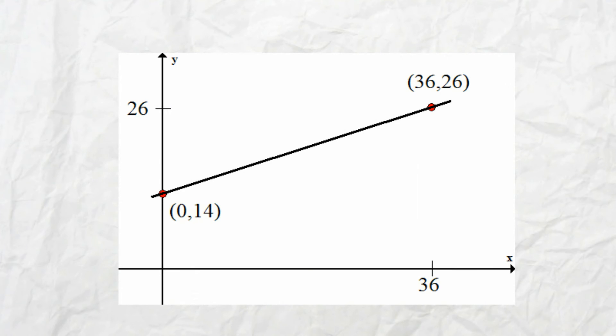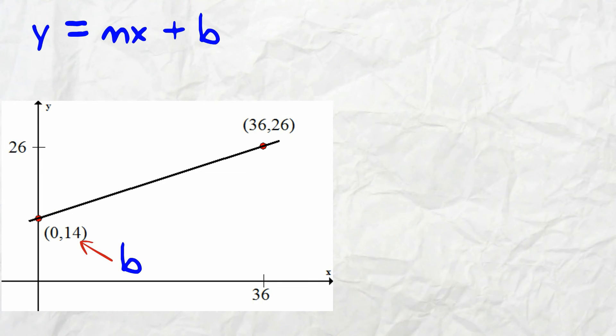To create the graph in this way, we already have b, the y-intercept. It's 14. Now all we have to do is find the value of the slope.